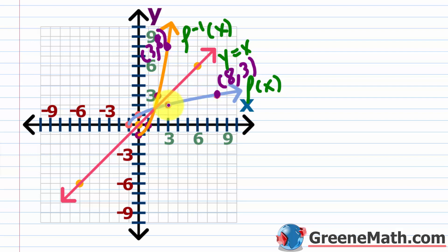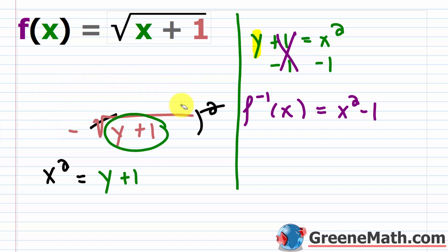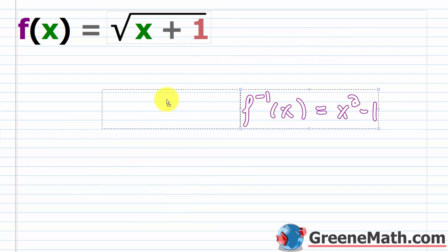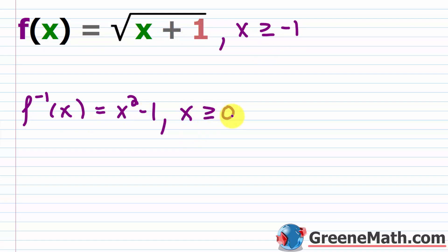You can take other points — for instance, 3 comma 2 folds across the line to give 2 comma 3, and so on. So going back to where we wrote the inverse, we need to put a domain restriction in for this to be valid. The correct statement is: f inverse of x equals x squared minus one, with x greater than or equal to zero. And for the original f of x, x is greater than or equal to negative one.